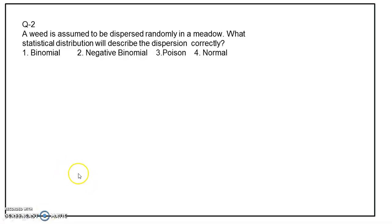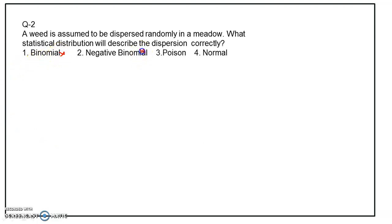Next question: a weed is assumed to be dispersed randomly in a meadow. What statistical distribution will describe the dispersion correctly? Binomial distribution is not possible because there is no equal probability of either happening. Negative binomial distribution is also not possible. Normal distribution is also not applicable. So the Poisson distribution is the correct answer here.